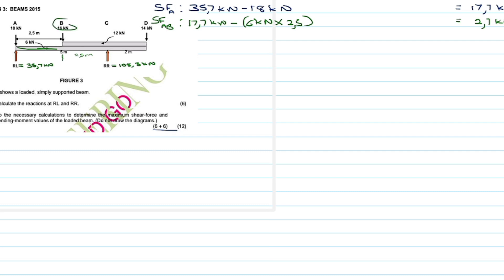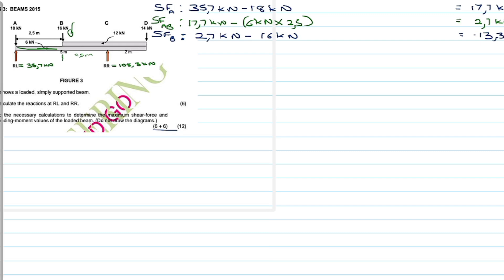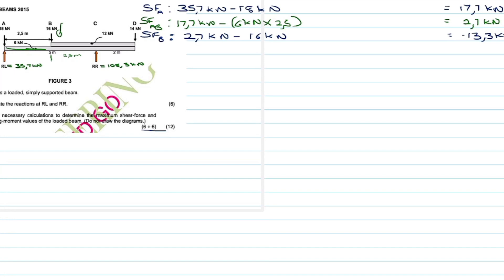At point B there is a force acting downwards. We take the previous answer of 2.7 kN and subtract the downward point load of 16 kN at B. So: 2.7 minus 16 = −13.3 kN. The shear force at B is negative 13.3 kN.